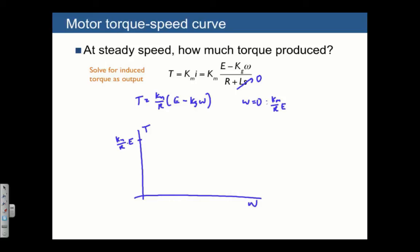The next case we can solve for is the intercept with T equals zero. If we want to solve for T equals zero, what we end up with is that E has to equal kg times omega. In other words, the torque is zero when omega equals E divided by kg. And then there's a straight line between the two.